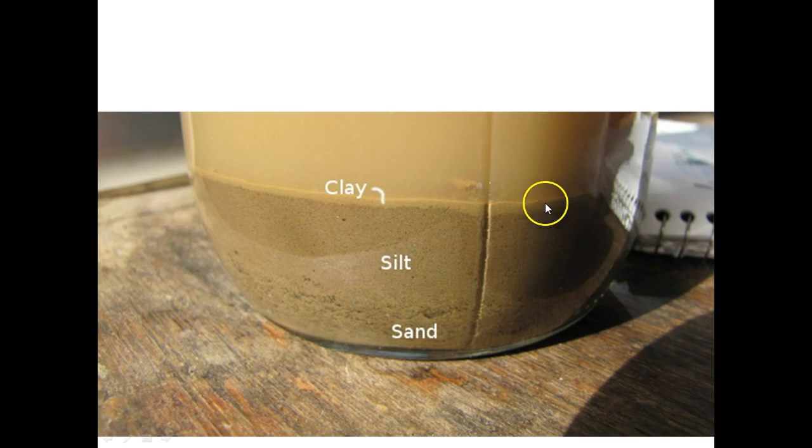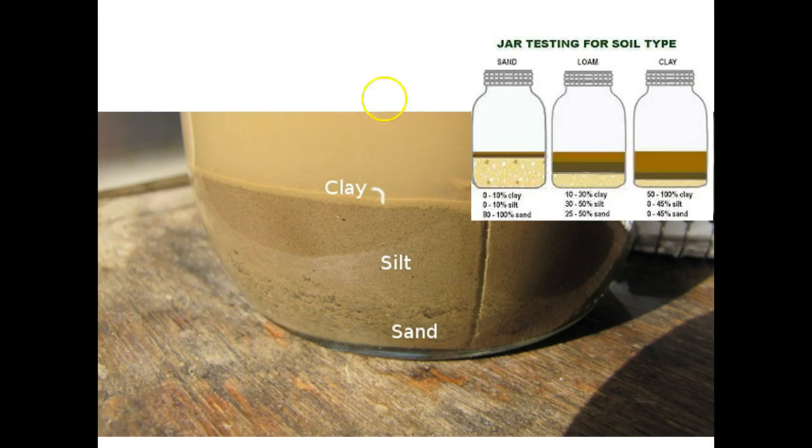Now, a really thin layer on top is the clay. And the cloudiness in the water is also the clay. The clay takes the longest to settle, and some of those clay particles may require a very long time to settle. So this jar testing is sort of just a qualitative way of looking at soil texture. And so you'll see different thicknesses in the bands of sand, silt, and clay, depending on the proportion of each of those in the soil.